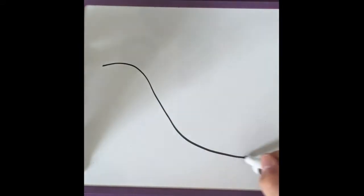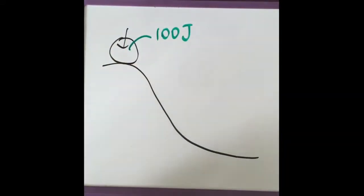Assume an object has a potential energy of 100 joules, which is the measurement of energy, and it starts rolling down a hill.